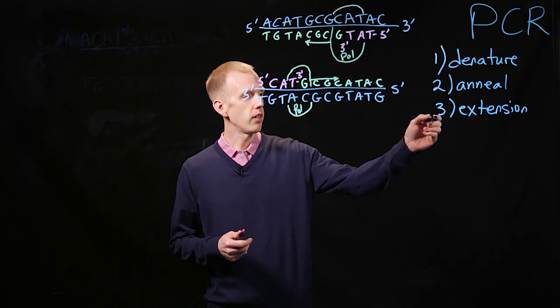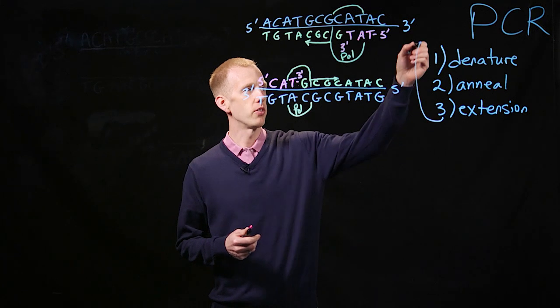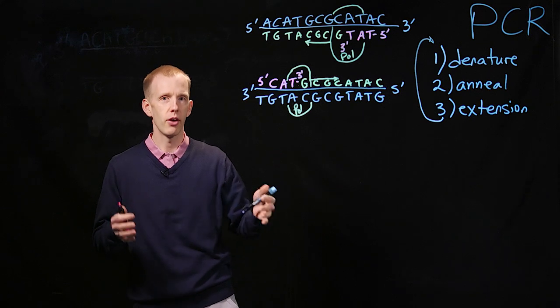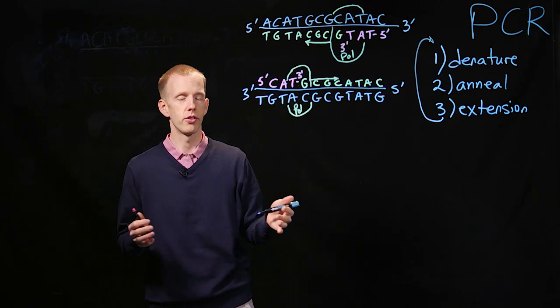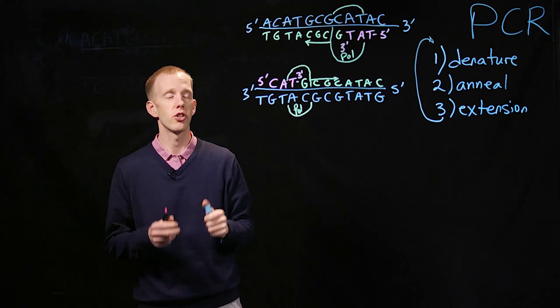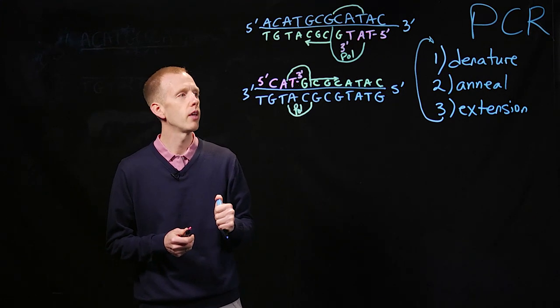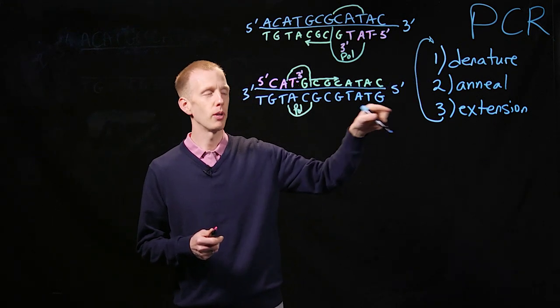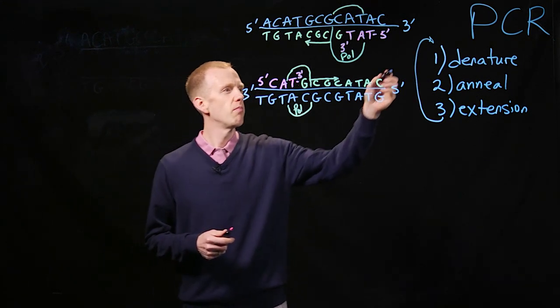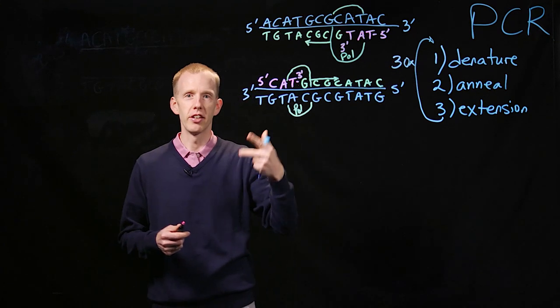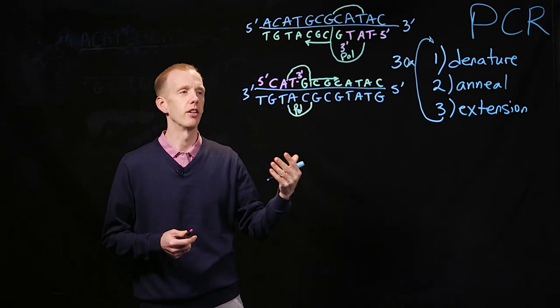And then normally we want to make more copies of DNA than just one, two new ones. We want to make thousands or tens of thousands or hundreds of thousands, actually billions, of extra copies of this initial double-stranded DNA molecule. And so often this cycle, that polymerase chain reaction occurs maybe 30 times. Denature, anneal, extend. Denature, anneal, extend.